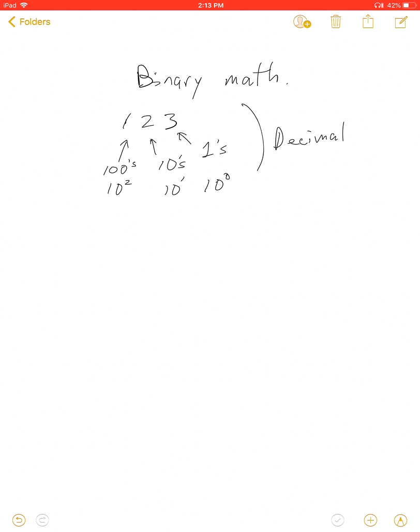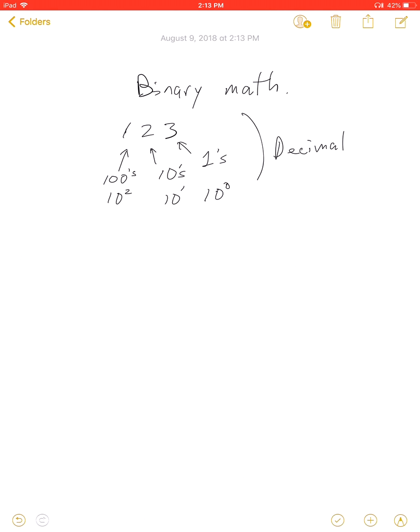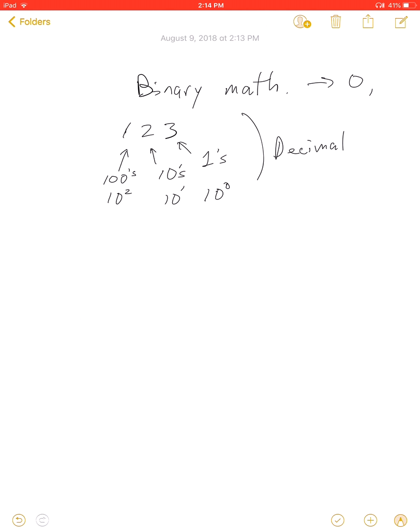In decimal mathematics we can have numbers from zero to nine. In binary mathematics we can only have zeros and ones. So if we had a number 101...